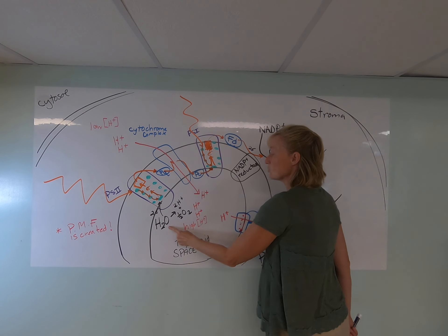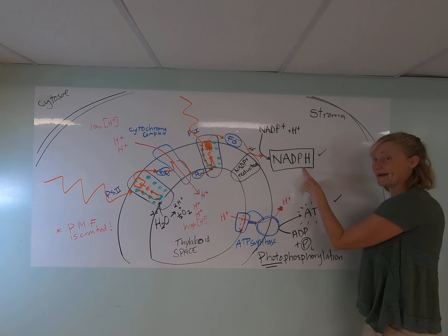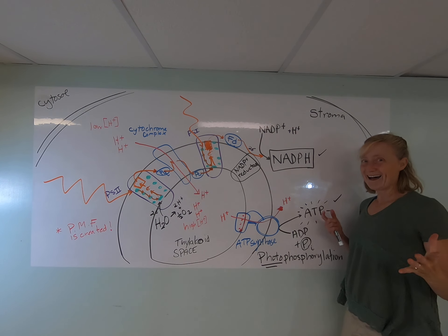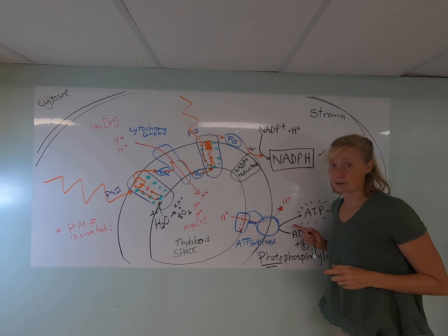So we took light energy and water, and we made NADPH, and we made ATP by photophosphorylation. That's the light reactions, the linear light reactions.